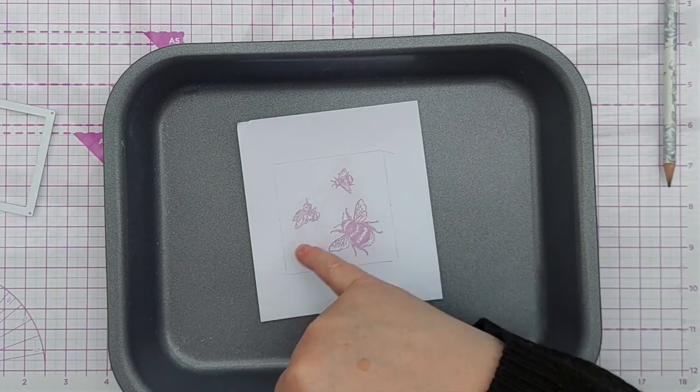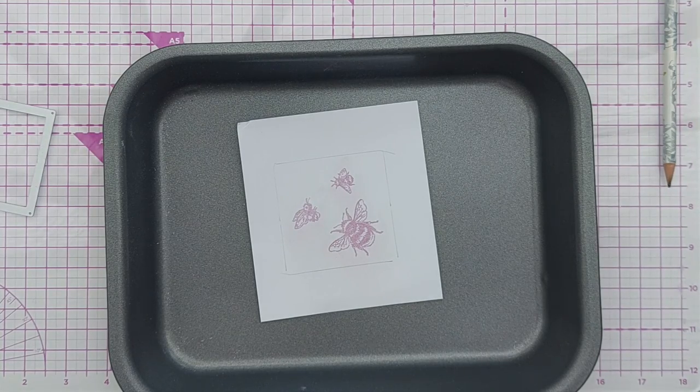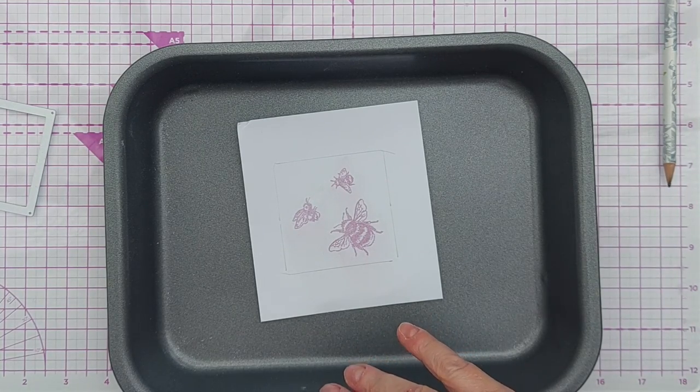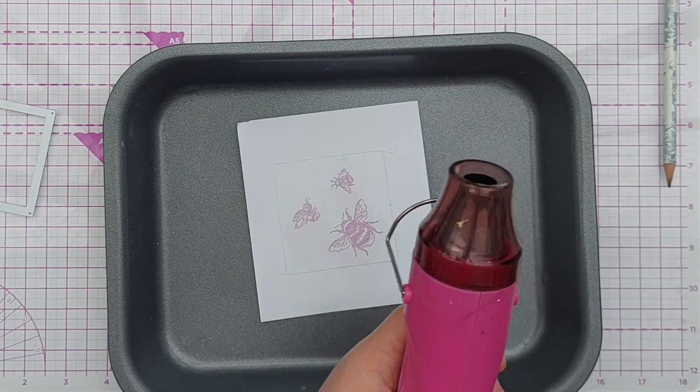Don't worry about the fact that you can still see some of the pigment around the bees. That should buff off when I have heat embossed it. I'm going to heat emboss it like I normally would any clear embossing powder.